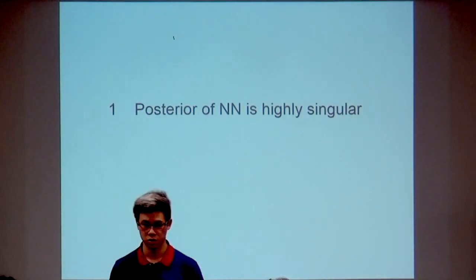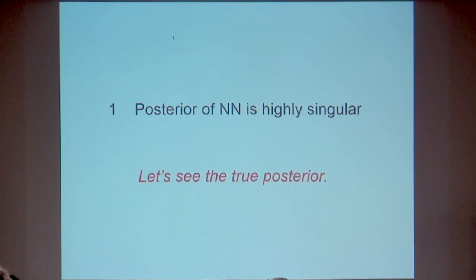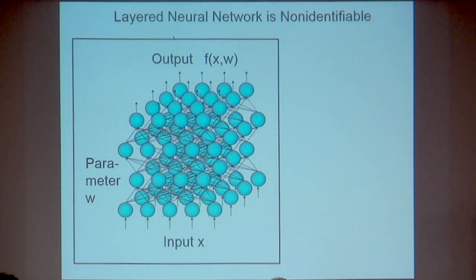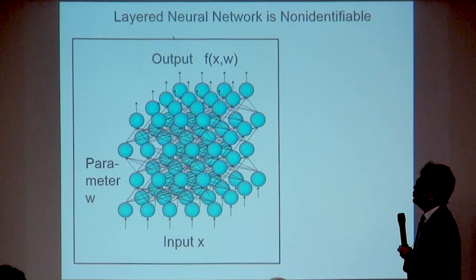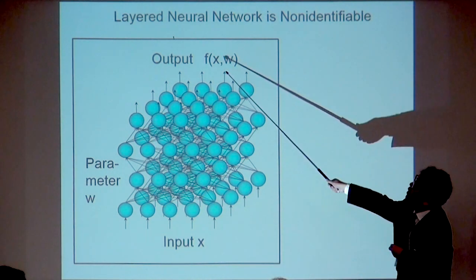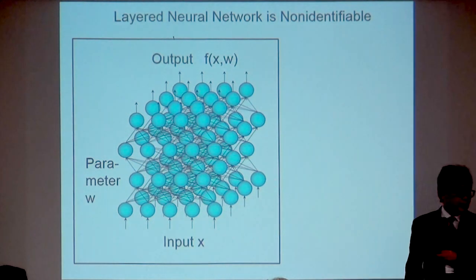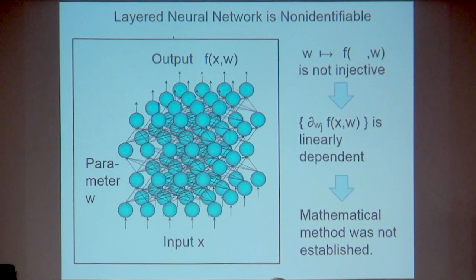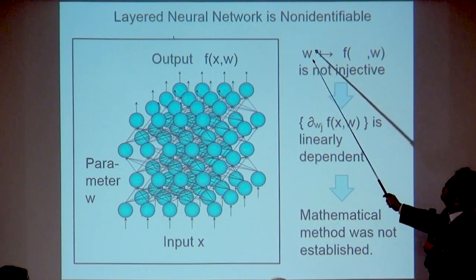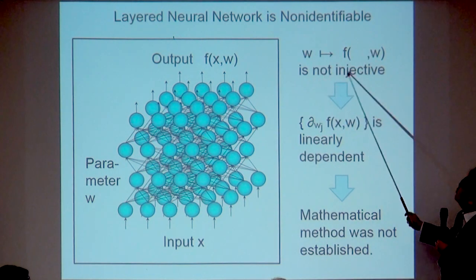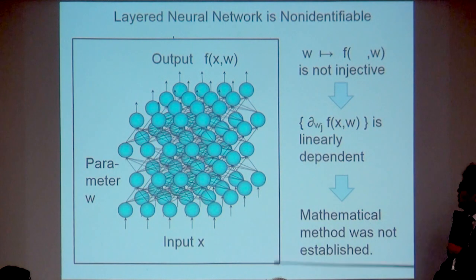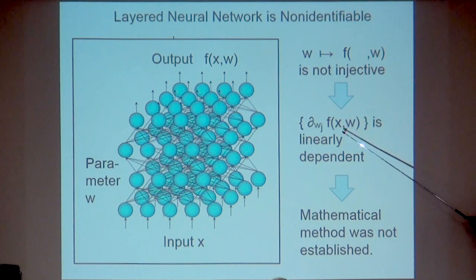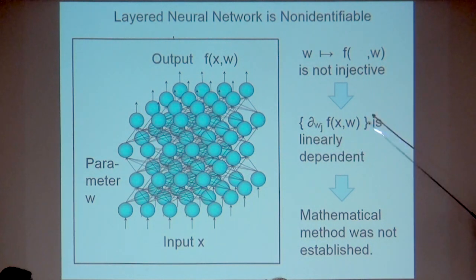The posterior of a neural network is highly singular. Let us see the true posterior distribution. You know deep learning — a deep network, or layered neural network. Here X is an input, and the output is a function of X and parameter W. From a mathematical point of view, the map from the parameter W to the function F is not injective — this map is not one-to-one. Hence, the derivative of F is not linearly independent, and a standard mathematical method was not established in this case.